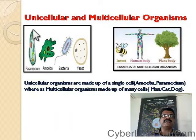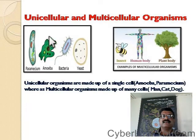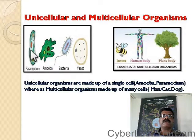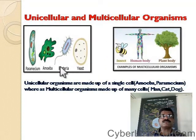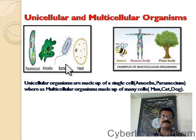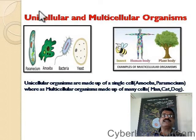The word 'uni' means one or single. Organisms like amoeba, paramecium, bacteria, euglena, and the fungus yeast — all these organisms possess a single cell. So those organisms having a single cell are called unicellular organisms.